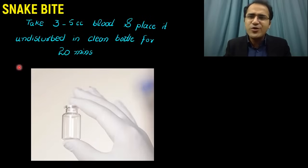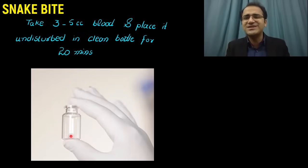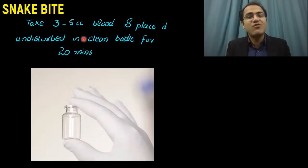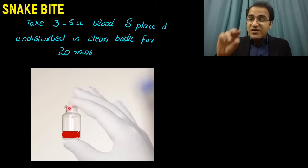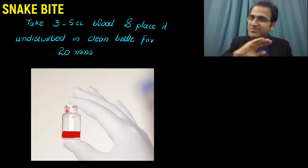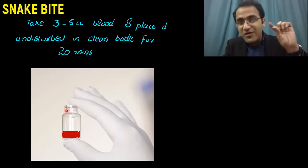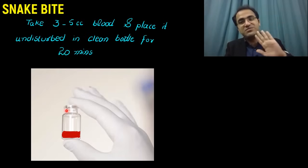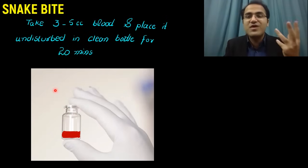If you are in a peripheral or rural area without PT-INR facility, take a clean transparent bottle, put 3 to 5 cc of blood in it, and place it undisturbed for 20 minutes. After 20 minutes, if the blood is clotted, the coagulation profile is normal. If the blood is still fluid after 20 minutes, it means the patient has been bitten by a hemotoxic snake. This is a simple method to check the bleeding profile.